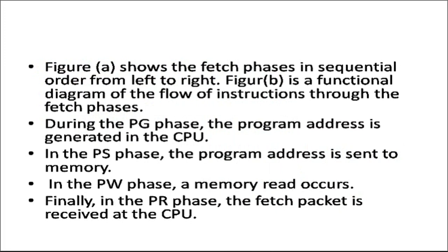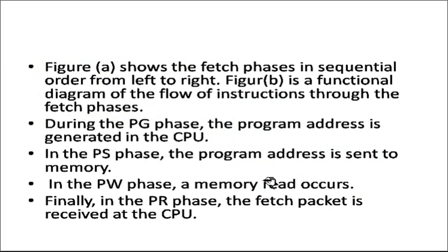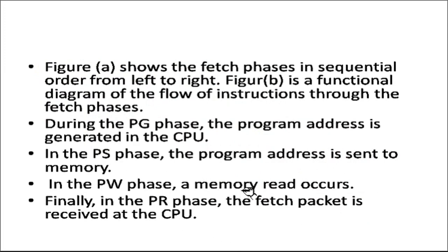The figure shows the fetch phases in sequential order from left to right. Figure B is a functional diagram of instruction flow through the fetch phases. During PG, the program address is generated in the CPU. In PS, the program address is sent to memory. In PW, the memory read occurs. And finally in PR, the fetch packet is received at the CPU.